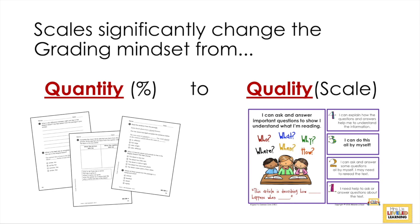Traditional grading is based on quantity. You give a test with a bunch of different learning goals and skills. This is an example of a language arts test for second graders — you'll have questions about vocabulary, comprehension, maybe story structure, answering questions. A lot of different skills are mixed into these traditional tests, and students get a grade based on the quantity they get right — their percentage.